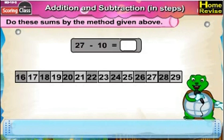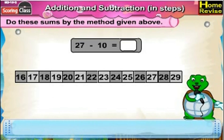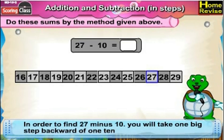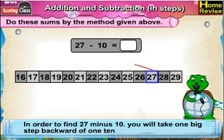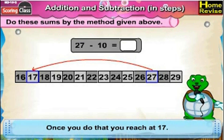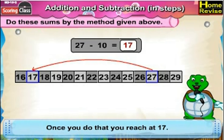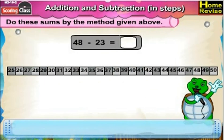Number 5: 27 minus 10. You're at 27. In order to find 27 minus 10, you will take one big step backward of 10. Once you do that you reach 17. So 27 minus 10 is 17.